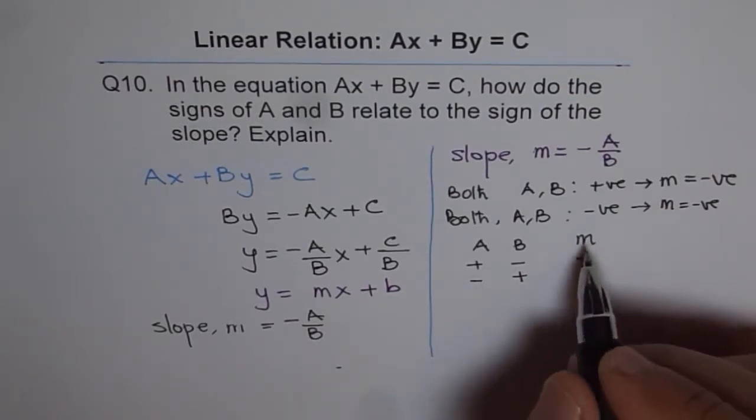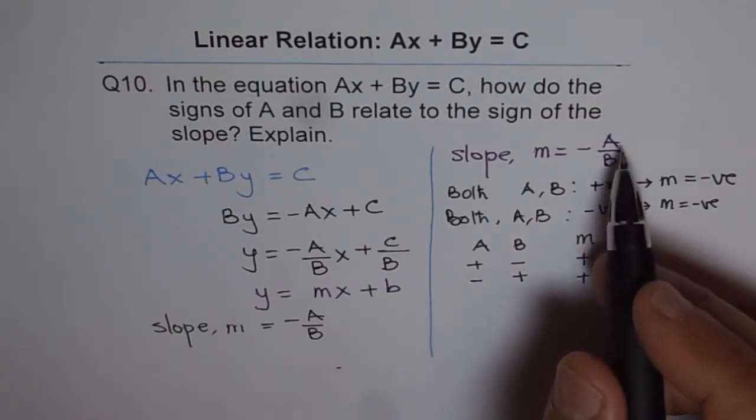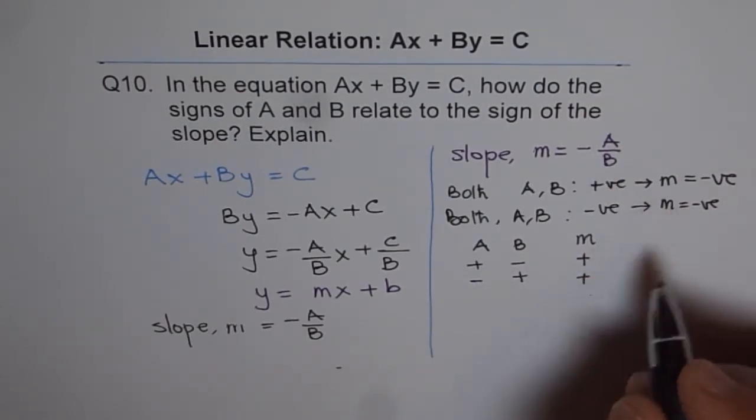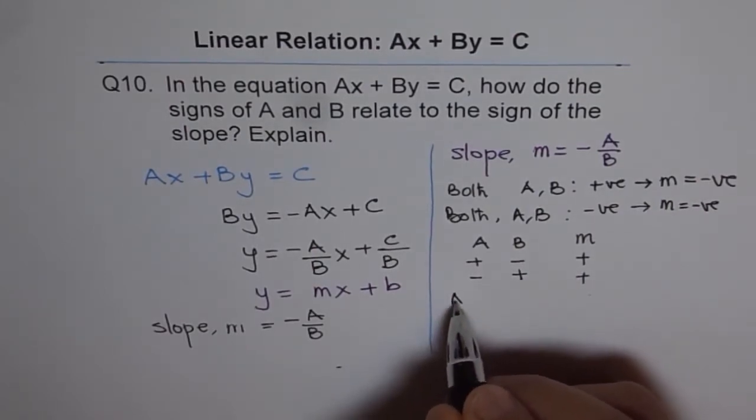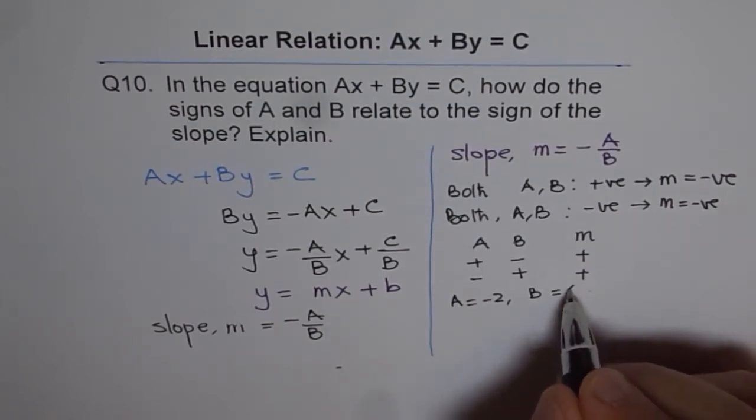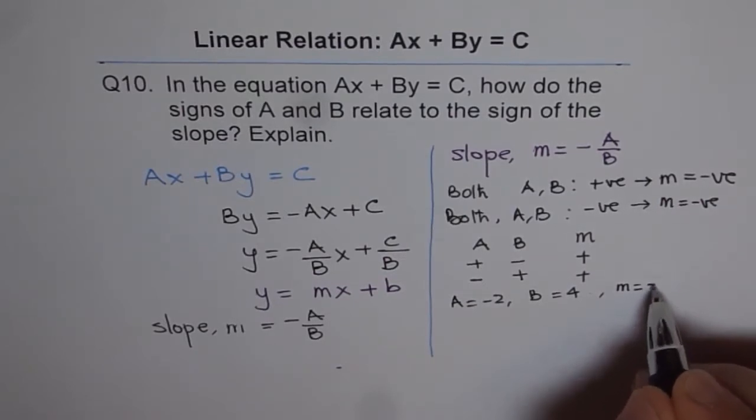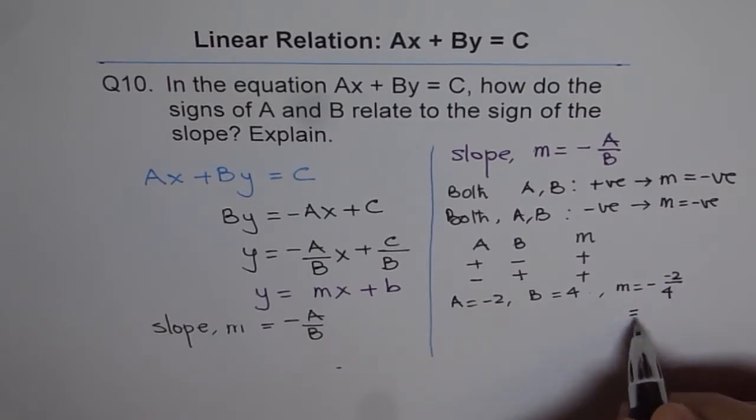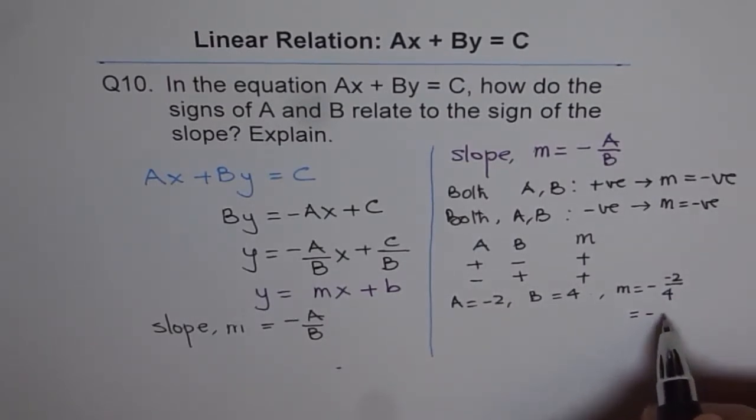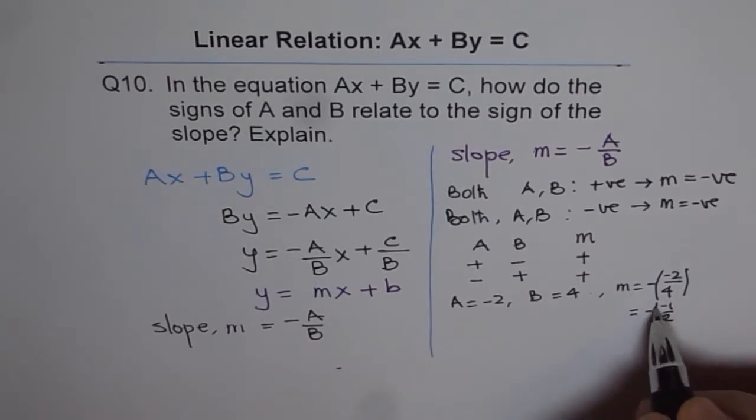Negative, positive will give us positive. So, if they have opposite signs, the slope will be positive. For example, if you take A equals to minus 2 and B equals to plus 4, opposite signs. Then, M will be equals to minus of minus 2 over 4, which will be minus of minus half. So, minus and minus will become positive. Let me write them in brackets so it's very clear.